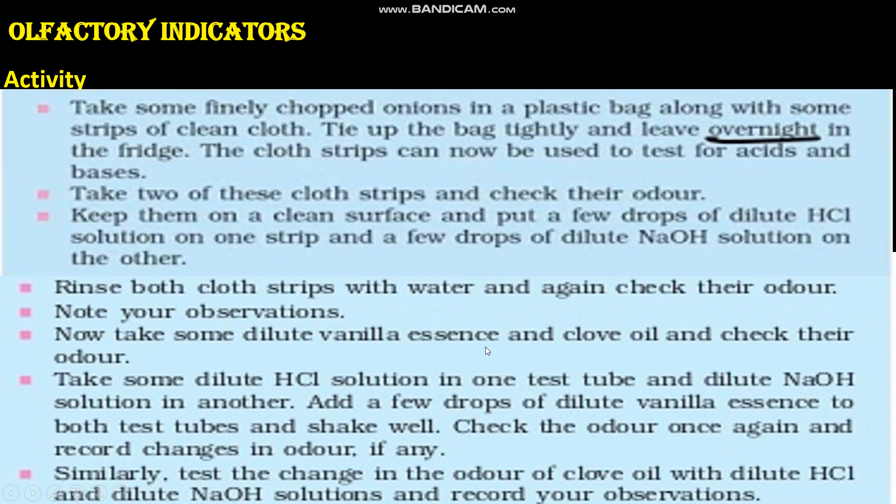Now let us see what are olfactory indicators. There is an activity for this in the textbook. Take some finely chopped onions in a plastic bag along with some strips of clean cloth. Tie up the bag tightly and leave overnight in the fridge. The cloth strips can now be used to test for acids and bases. Put a few drops of dilute HCl on one strip and a few drops of dilute NaOH on the other, then rinse both strips with water and check their odor.